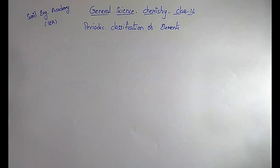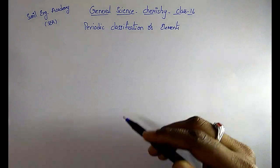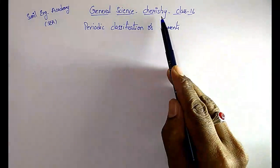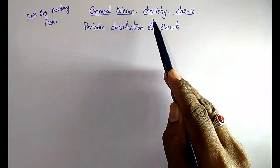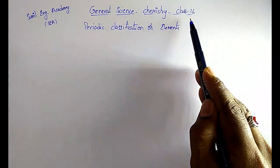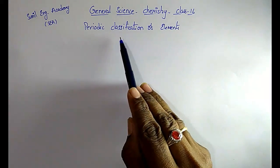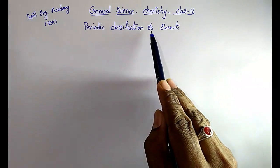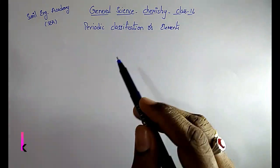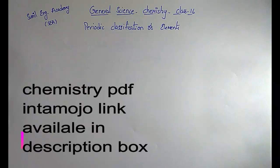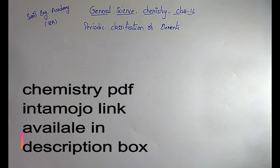Hi friends, welcome to Sunil Engineering Academy. I am Sunil. In chemistry we have already completed 15 classes. This is class 16. Topic is periodic classification of elements. If you want chemistry class notes as PDF, you can download from the Insta module link which is in my description box. Click on that link under the PDF.